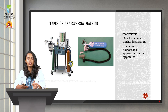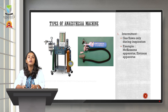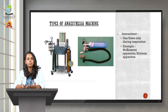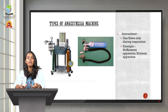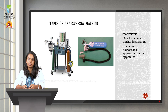The Entonox apparatus mainly consists of an Entonox gas cylinder, tubing, and a face mask. Whenever pregnant patients who are about to deliver feel labor pain, they willingly inhale this gas in order to have the analgesic effect.